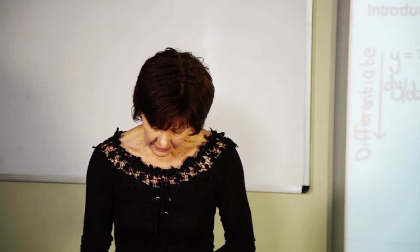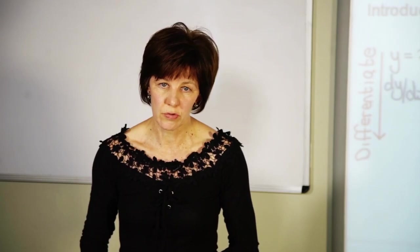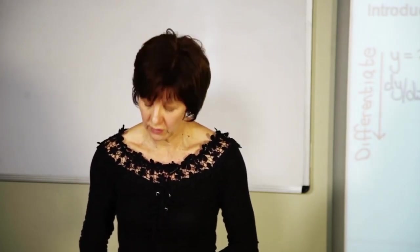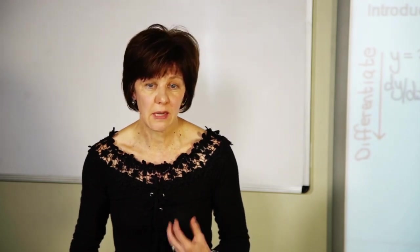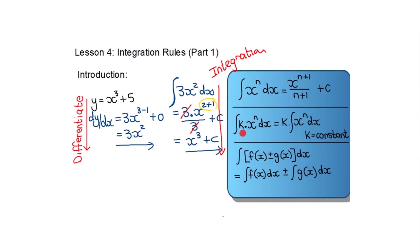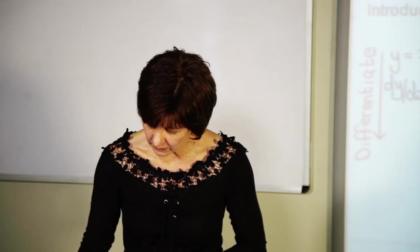We're going to look at some integration rules. There are more on your formula sheet, but we'll start with the first three. Rule 1: if you have x^n, write down x^n, add 1 to the exponent, and divide by this new exponent n+1, and remember to say plus a constant. Rule 2: if you have k·x^n, take out the k and integrate x^n. Rule 3: if you have more than one term, you can integrate each term separately and join the answers with the original signs.